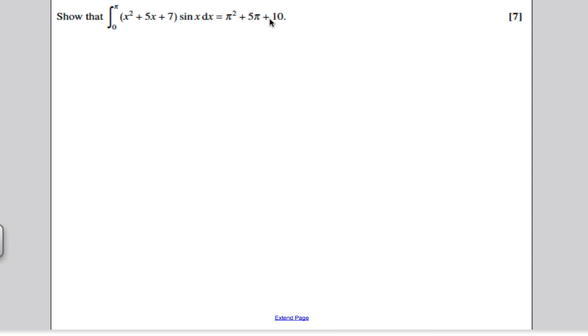Let's start by taking a look at the question. The question says show that the following integral is given by this. I'm going to call this integral I. Looking at it, you've got a function of x here, x squared plus 5x plus 7, multiplied by another function of x, which is sine x. I'm thinking straight away because I've got two functions multiplying together, I need to use integration by parts.